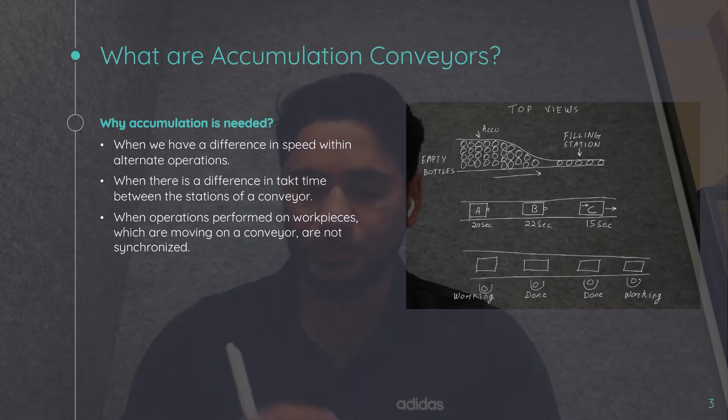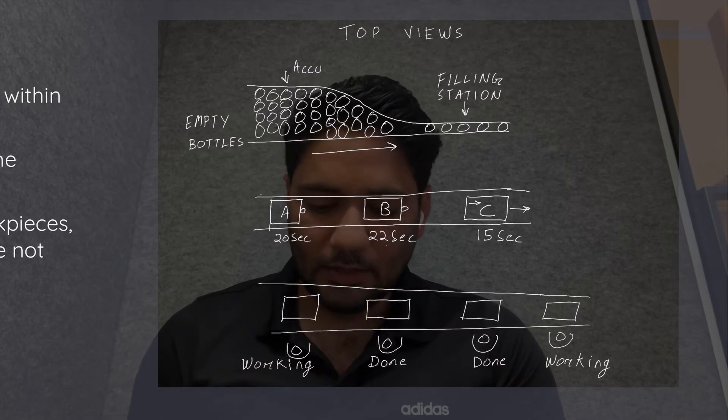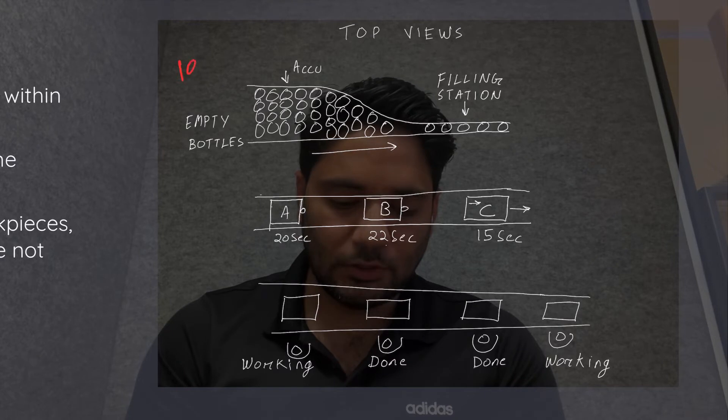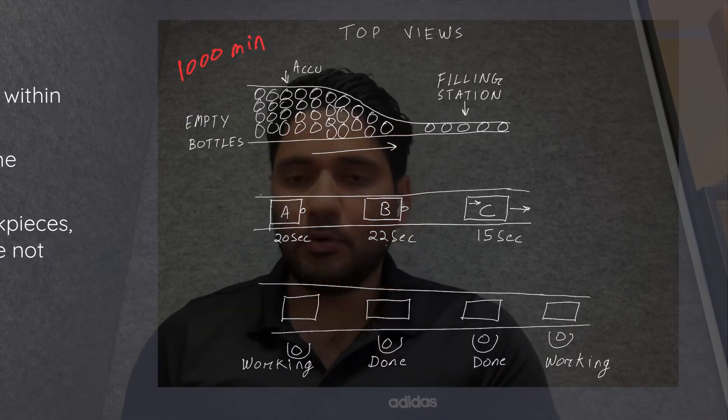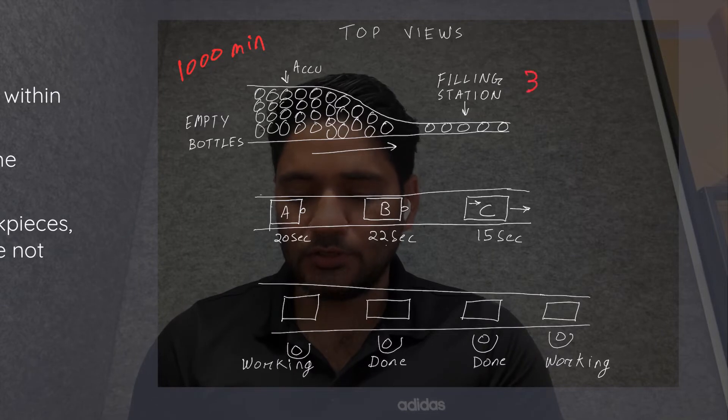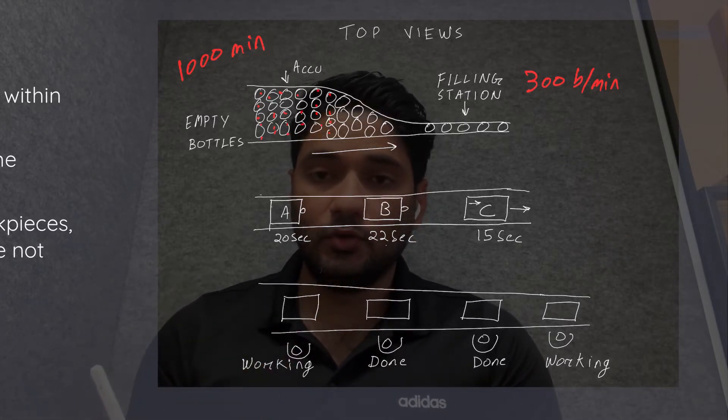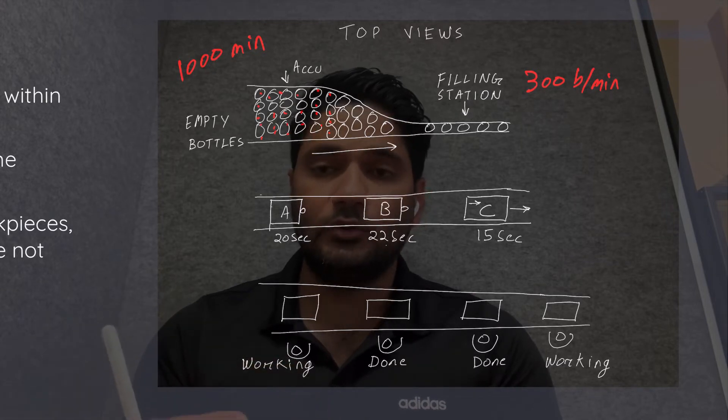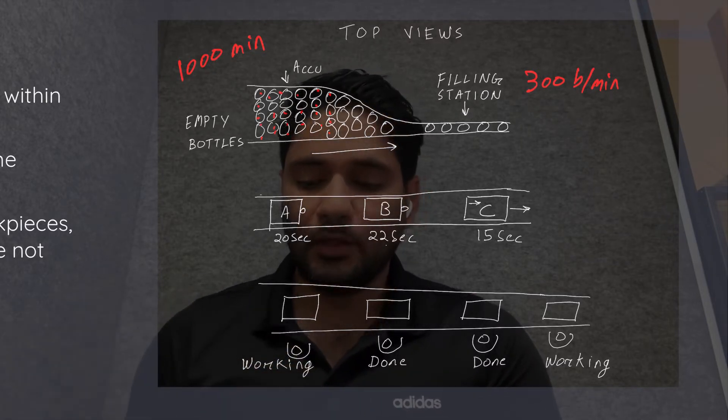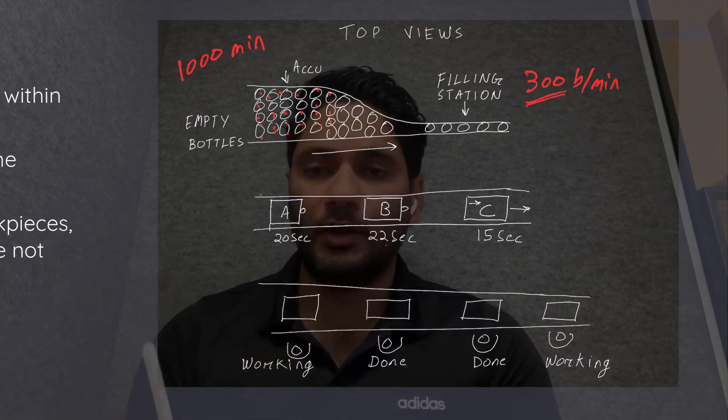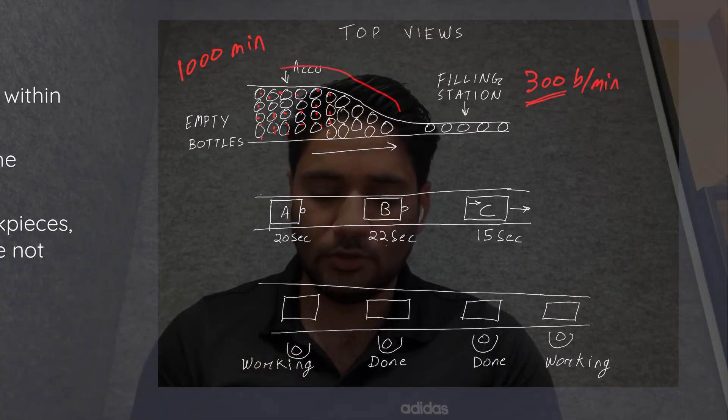Let's say you're feeding bottles to an empty conveyor and you can feed, let's say, 1000 bottles a minute, but the filling station can only cater to 300 bottles per minute. So in this case, you would want to accumulate all these things because they are being fed in a batch, and the operator can engage in some other activities until all 1000 bottles are being filled. So in this case, accumulation is required in this area.